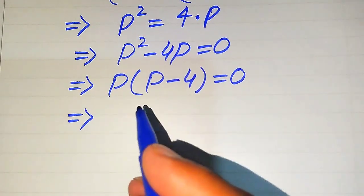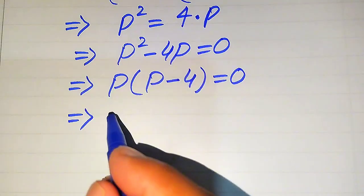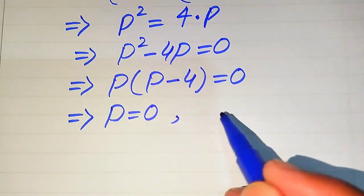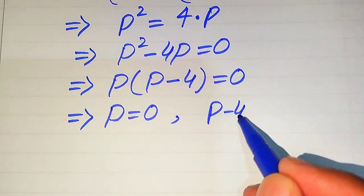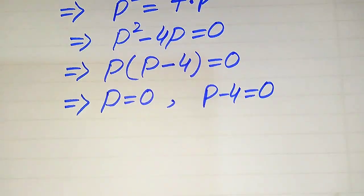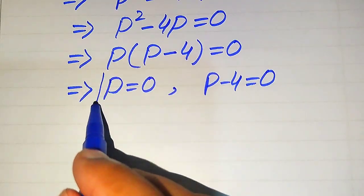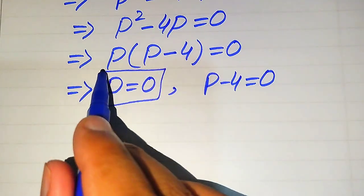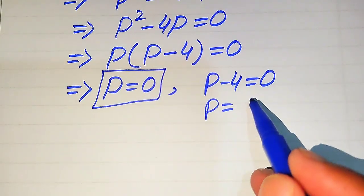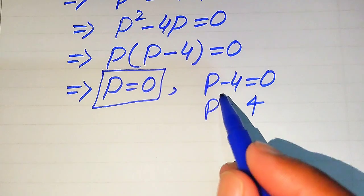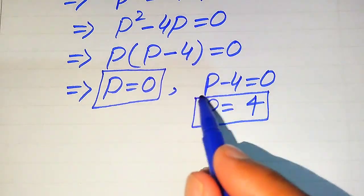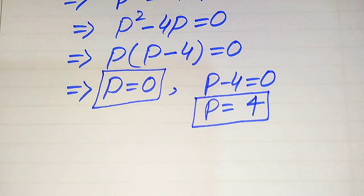Now we split this equation into two cases. The first case gives p equals 0, and the second case is p minus 4 equals 0, which gives p equals positive 4, because when we move minus 4 to the right hand side it becomes plus 4. So these are the two roots of the given equation.